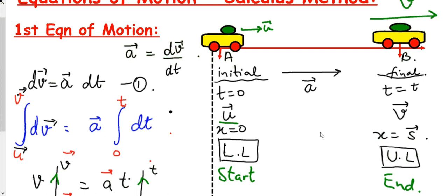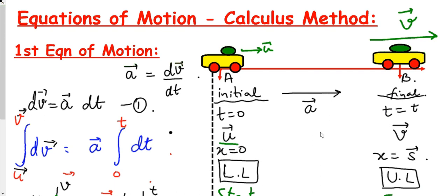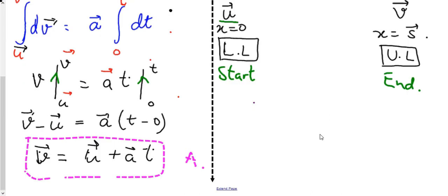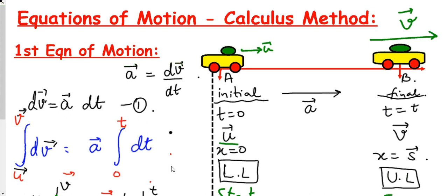Now for the first equation of motion, v = u + at. We start with the definition: acceleration is the rate of change of velocity, so a = dv/dt. Cross multiplying, we get dv = a·dt. Let's call this equation number 1.